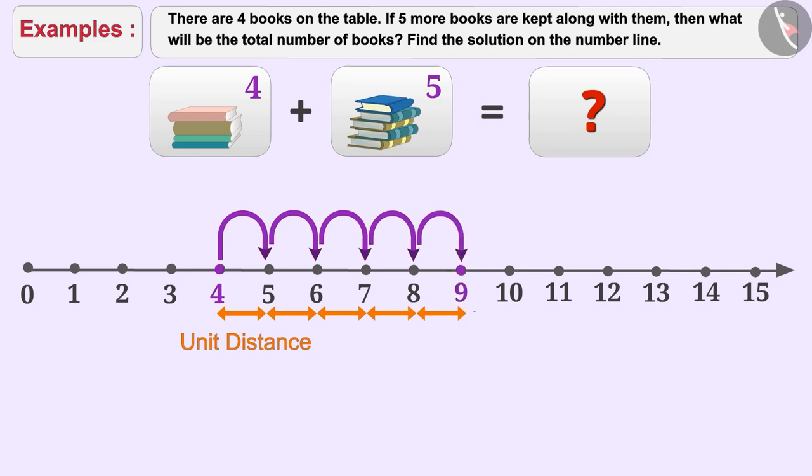Since the last arrow points to nine, therefore, the sum of four and five is nine. That is, there are nine books on the table now.